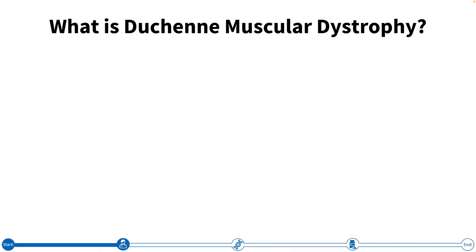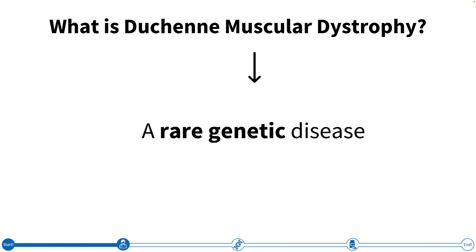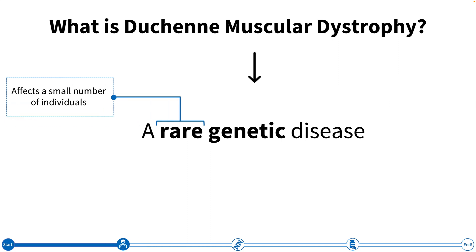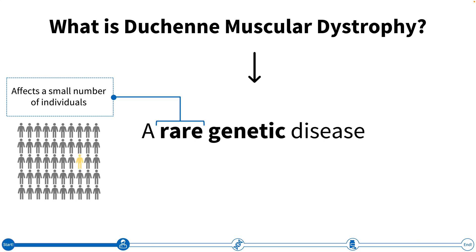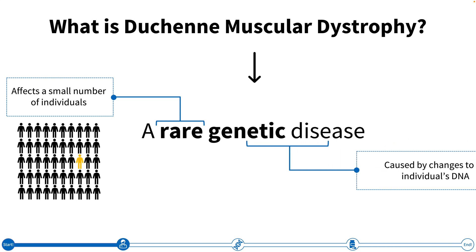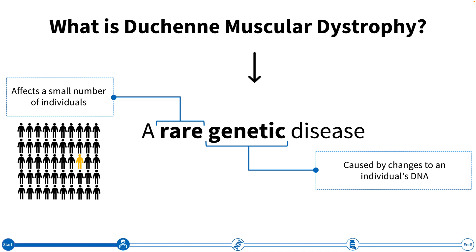Duchenne muscular dystrophy, also called Duchenne for short, is a rare genetic disease. By rare, we mean that if we were to take all of the people in a certain population, a relatively small number would have this disease. By genetic, we mean that it is caused by changes to the DNA. We'll review exactly what this means later on, but let's first explore some of the symptoms of Duchenne.